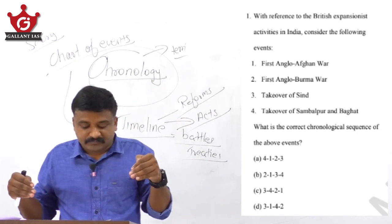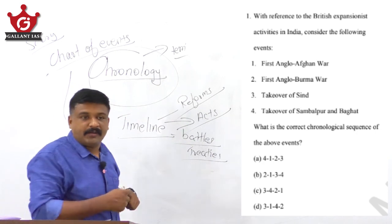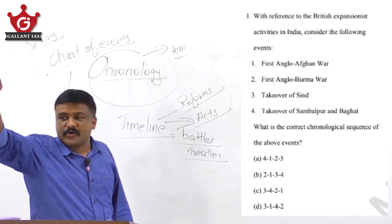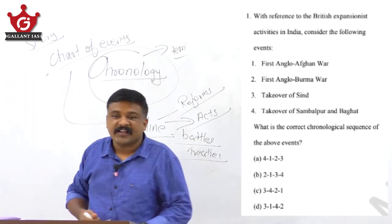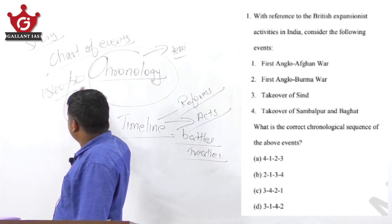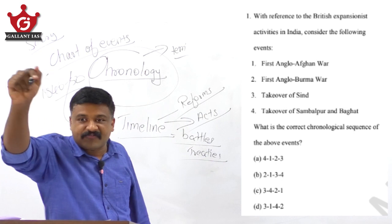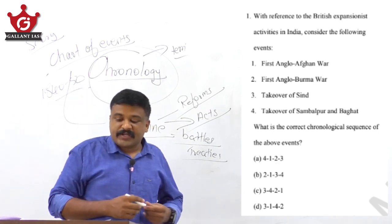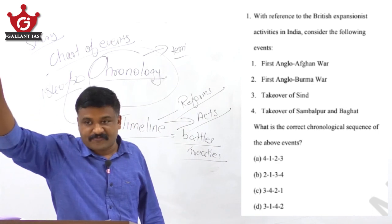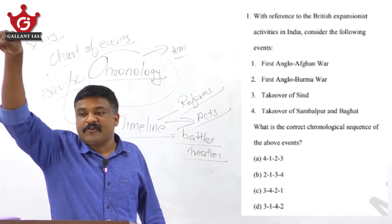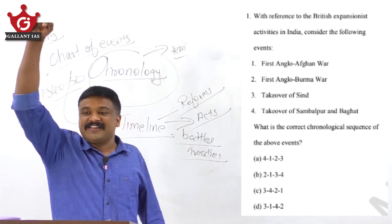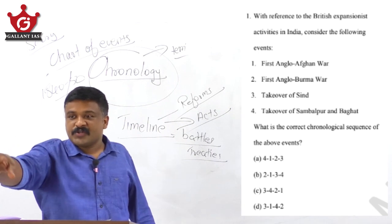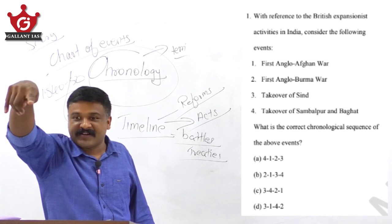Do you know the timeline of these events? Dalhousie and his viceroyalty happened approximately in the 1840s and 50s, very close to the 1857 revolt. Most of his reforms are responsible for the 1857 revolt. Sambalpur was taken in 1850. Sindh was annexed in 1843 because of the Russian fear — Russia sent embassy missions to Afghanistan and the British East India Company feared Russia would come to India through Sindh, so it was annexed to protect British Empire frontiers.